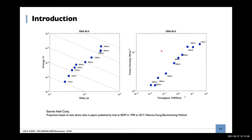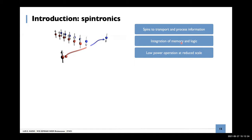This is where spintronics appears. In spintronics we use spins to transport and process information. The two big objectives are: integration of memory and logic in the same node, and low power operation at reduced scale. Integration of memory and logic is really important because in current computing topologies, memory and logic are separated — computers send all logic information to memory and back, wasting precious time. If we could integrate everything in a non-volatile way using magnetic materials, operations would be much faster and need less energy.